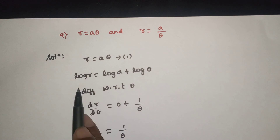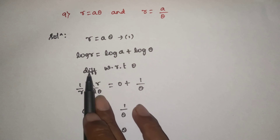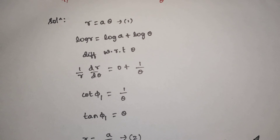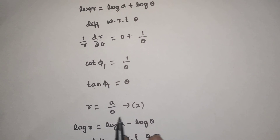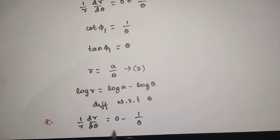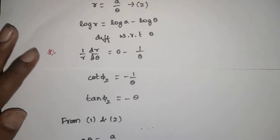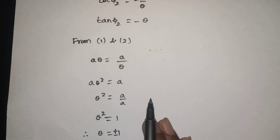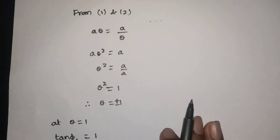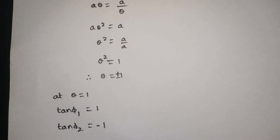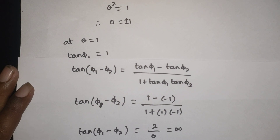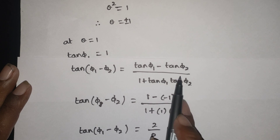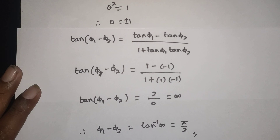To summarize: for r equals a·θ, take log and differentiate to get tan φ₁ equals θ. For r equals a/θ, log r equals log a minus log θ, differentiate to get cot φ₂ equals minus 1/θ, so tan φ₂ equals minus θ. Setting the curves equal: a·θ² equals a, so θ equals 1. Then tan φ₁ equals 1, tan φ₂ equals minus 1, and tan(φ₁ - φ₂) equals 2/0 equals infinity, giving φ₁ minus φ₂ equals π/2.